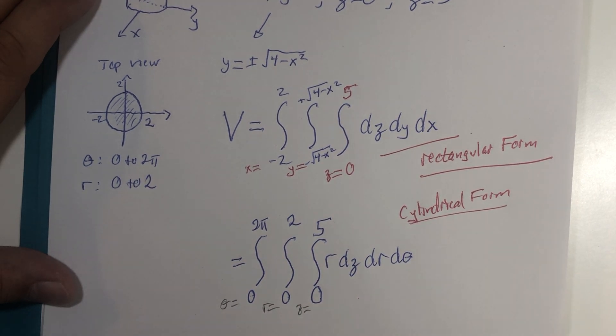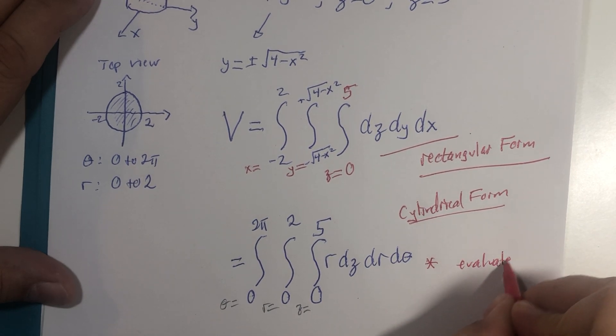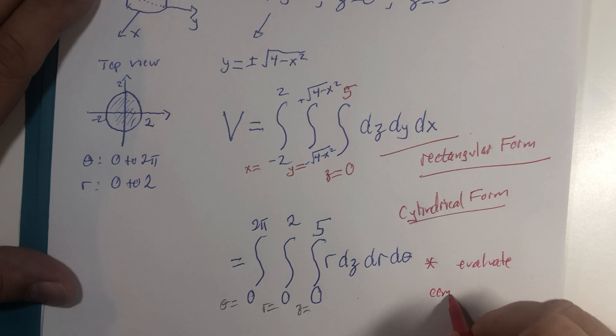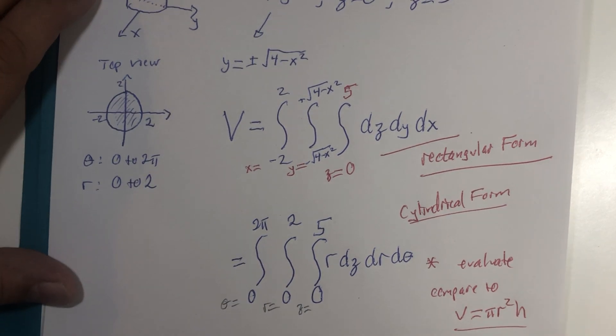And so that would be theta and that would be r and that would be z. And I strongly encourage you to evaluate this and compare to volume equals the area of the circle times the height. And just to make certain that those formulas do agree.